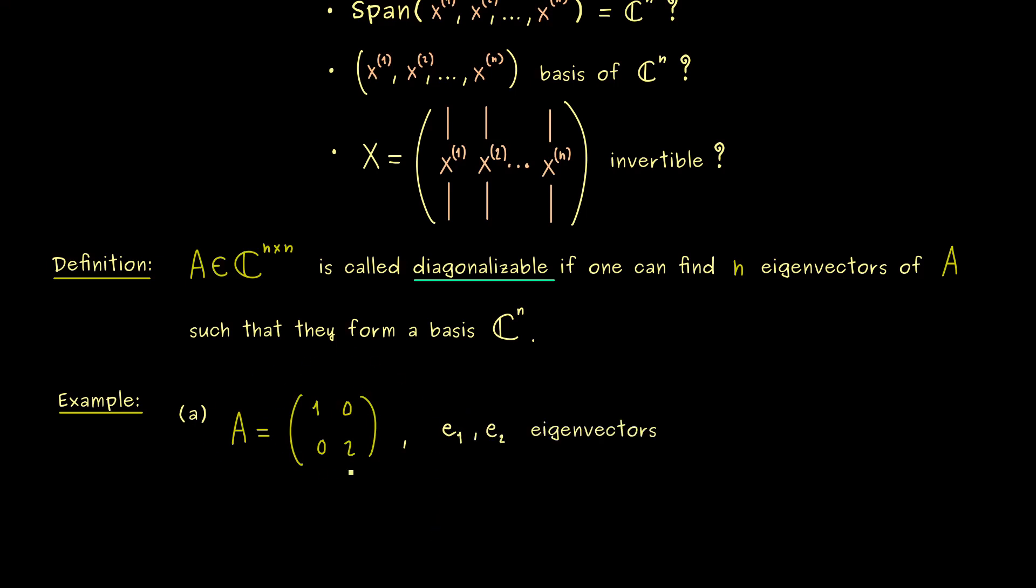So for example, for the 2 times 2 matrix here, E1 and E2 are eigenvectors. And of course, this is the standard basis of C^2 and therefore A is diagonalizable. Of course, each diagonal matrix should be a diagonal matrix as well.